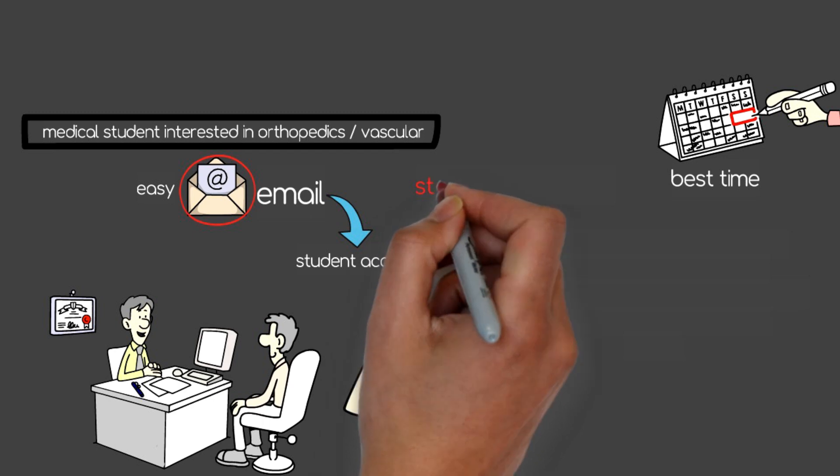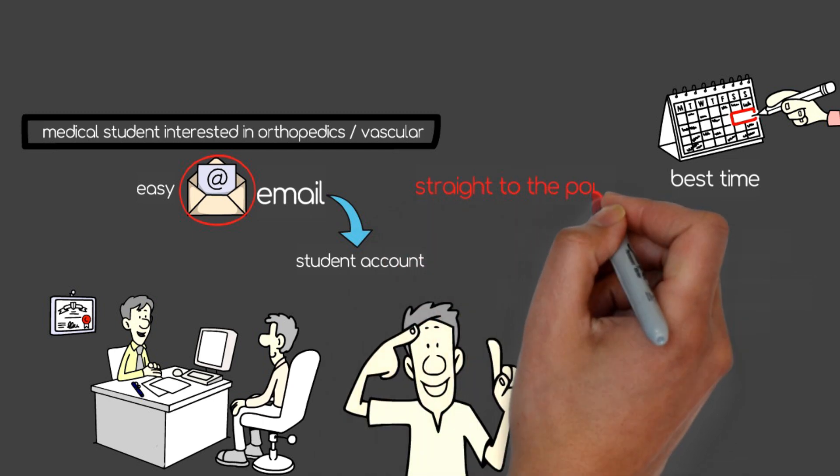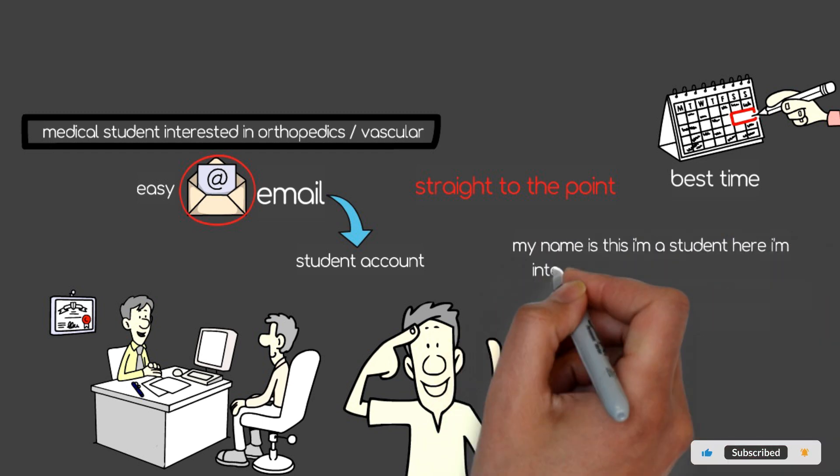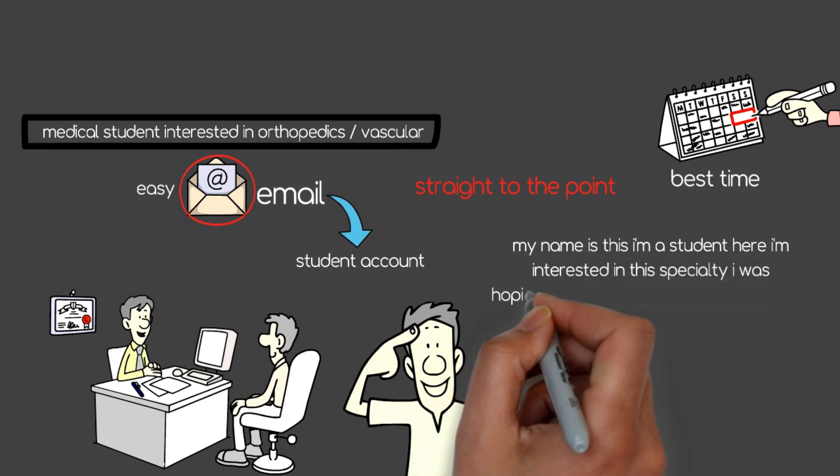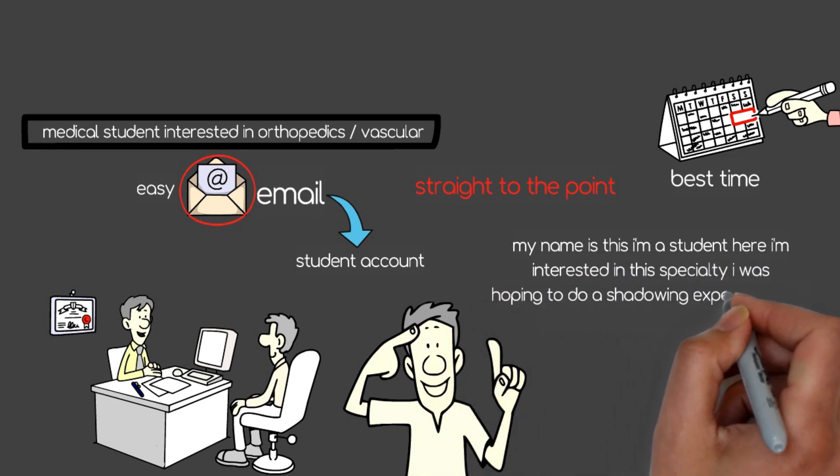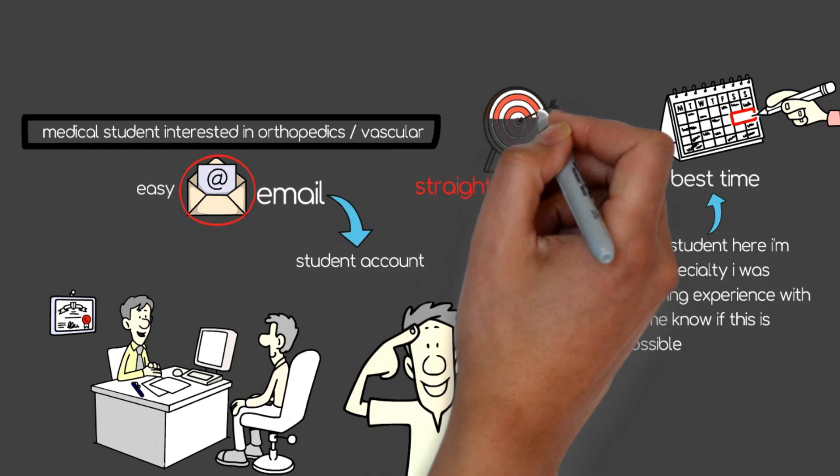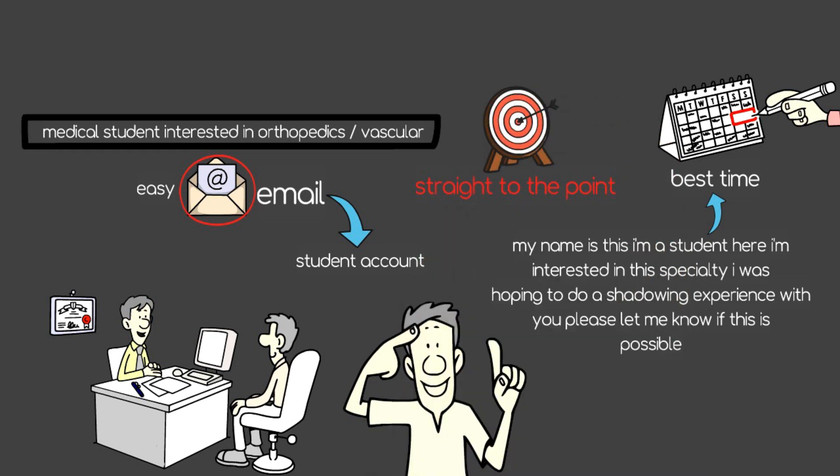Don't be too wordy with the email, just get straight to the point. Hey doctor whoever or the secretary's name, my name is this, I'm a student here, I'm interested in this specialty, I was hoping to do a shadowing experience with you, please let me know if this is possible, below are some dates and times that I'm available. That's it. You don't need to get fancy with it, you don't need to waste their time, just get to the point, get it done.